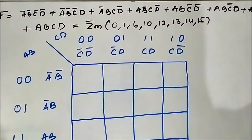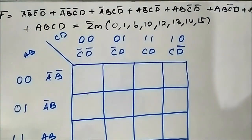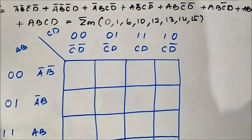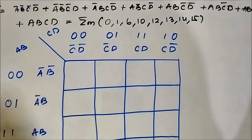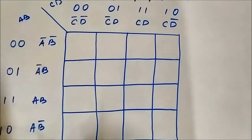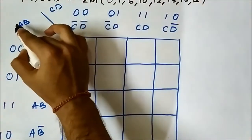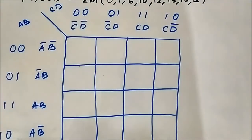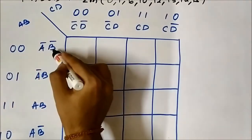Here we have a four-variable SOP expression — a very lengthy one. It is A̅B̅C̅D̅ + A̅B̅C̅D + A̅BCD̅ + ABCD̅ + ABC̅D̅ + ABC̅D + ABCD̅ + ABCD, corresponding to min term values 0, 1, 6, 10, 12, 13, 14, 15. We have to map it into the four-variable K-map, where A, B are on the horizontal side and C, D are on the vertical side — A is the MSB and D is the LSB. For A̅B̅C̅D̅: horizontal A̅B̅, vertical C̅D̅ — marked as 1. For A̅B̅C̅D: horizontal A̅B̅, vertical C̅D — marked as 1.